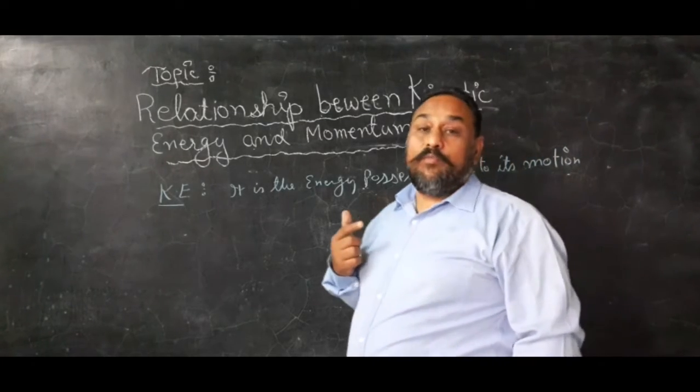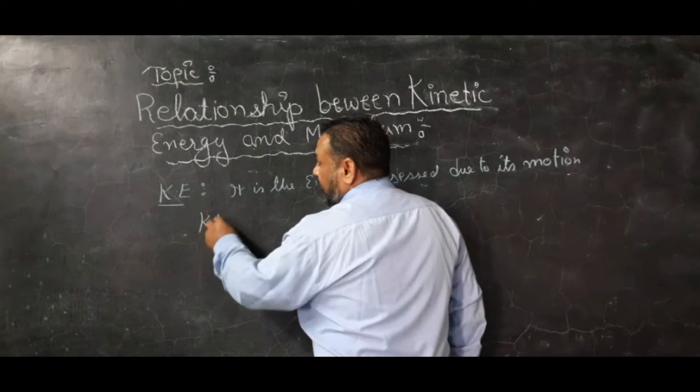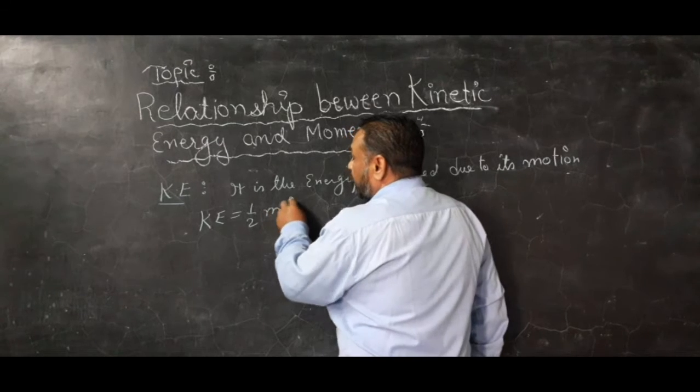So the relation for kinetic energy equals half mv squared - m for mass and v for velocity of the body with which it is moving.